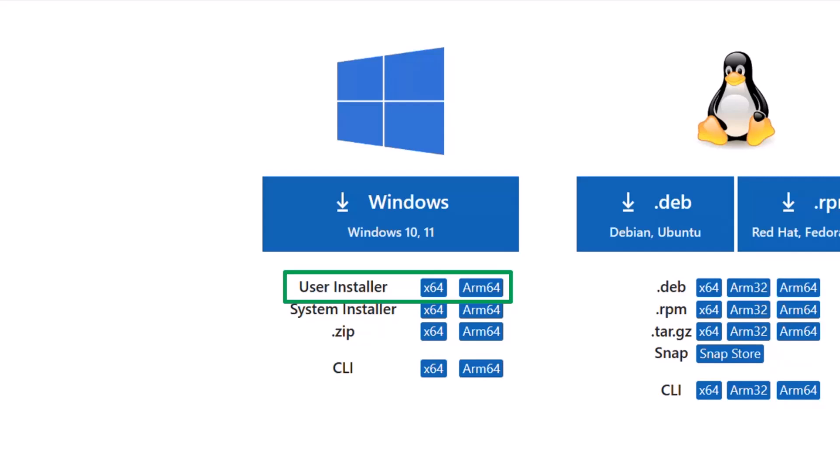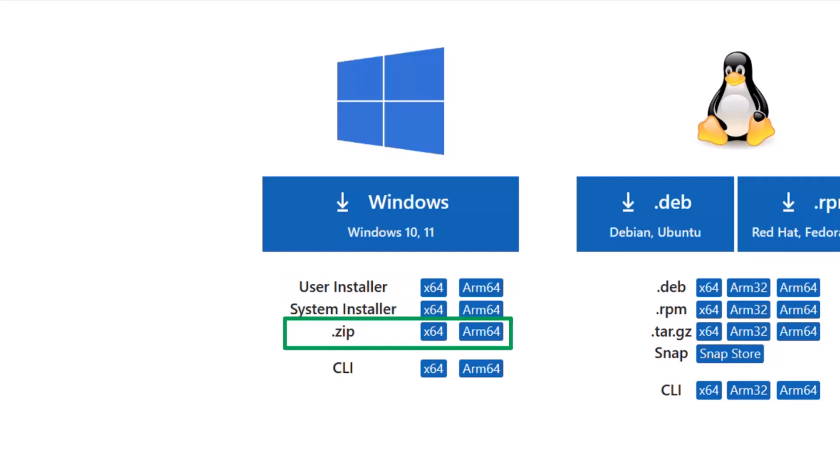The User Install acts as if you were installing a document in your documents folder, which is great for locked workstations. You can also download the zip version of Visual Studio Code and run it from anywhere. I usually have a USB stick with VS Code on it — if I ever need VS Code on a machine, I can just run it from there.